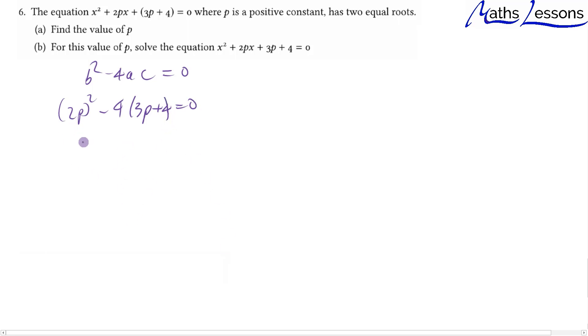So we get 4p² minus 12p plus 16 equals 0. Cancel out by 4, so p² minus 3p plus 4 equals 0.